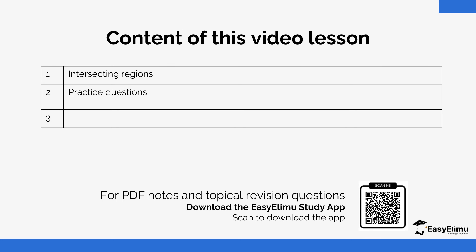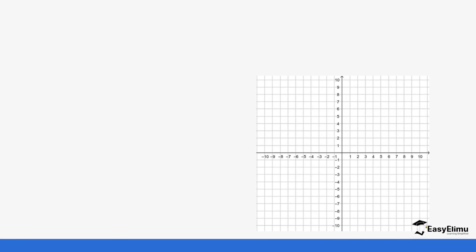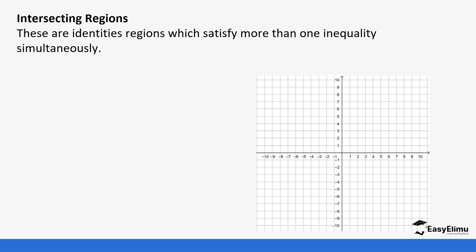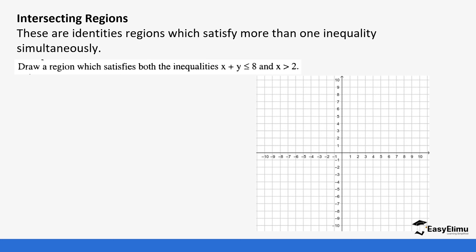In the previous lessons we looked at how to convert an inequality and show it in a graph. Now, what about the case where we have more than one inequality shown simultaneously in a graph and they intersect at a point? For example, draw a region which satisfies both inequalities: x plus y is less than or equal to 8, and x is greater than 2.